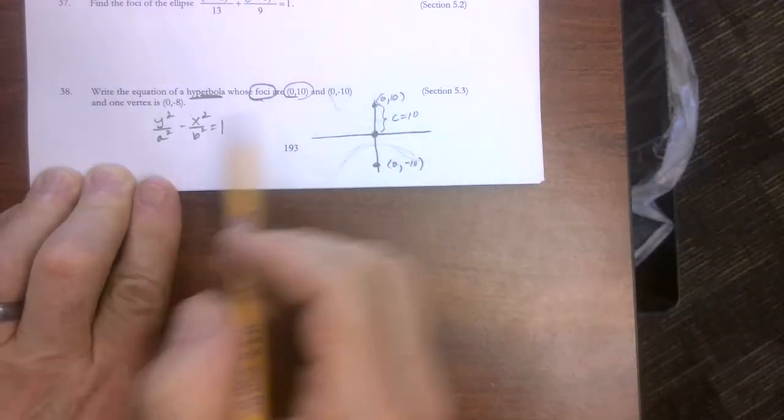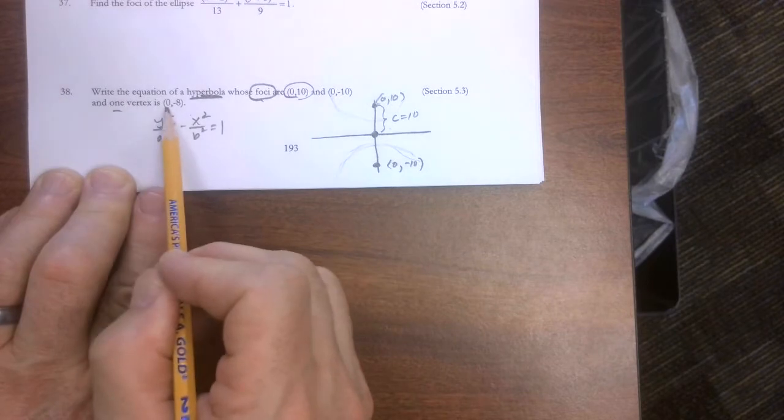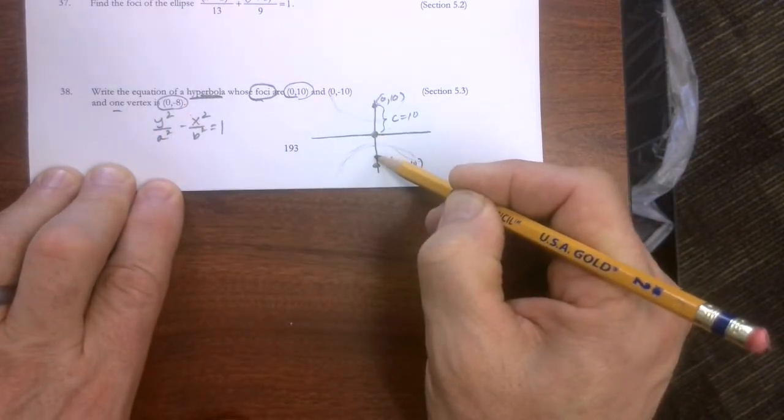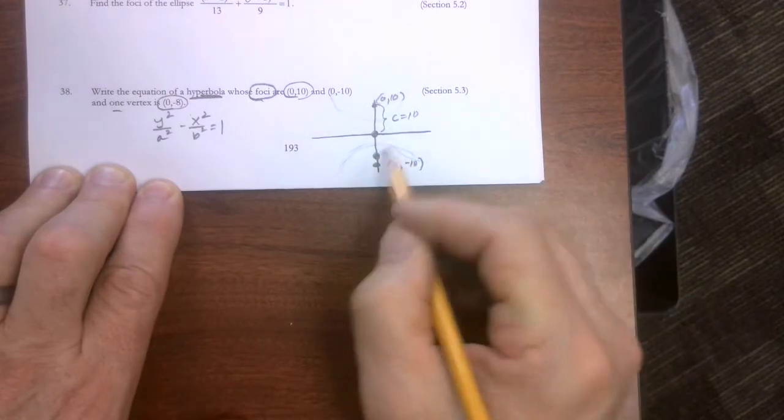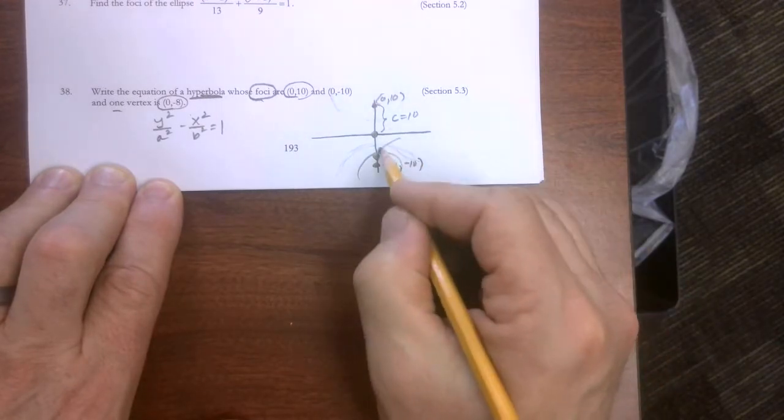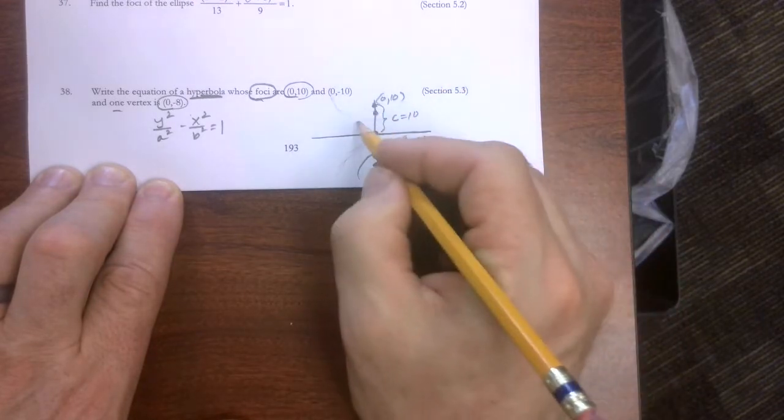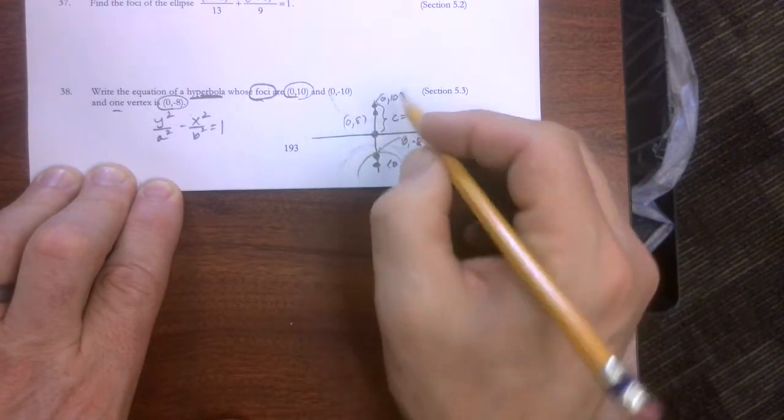So one thing we do know from this is that c equals 10. We might use that a little later, but it says one vertex is 0, negative 8. That's telling us that the vertex right here is 0, negative 8.